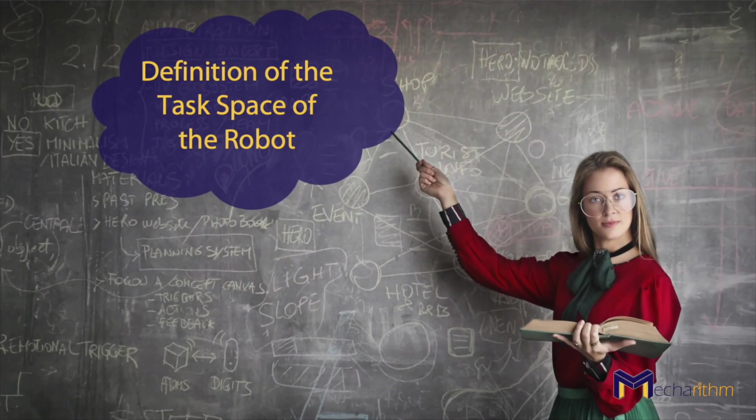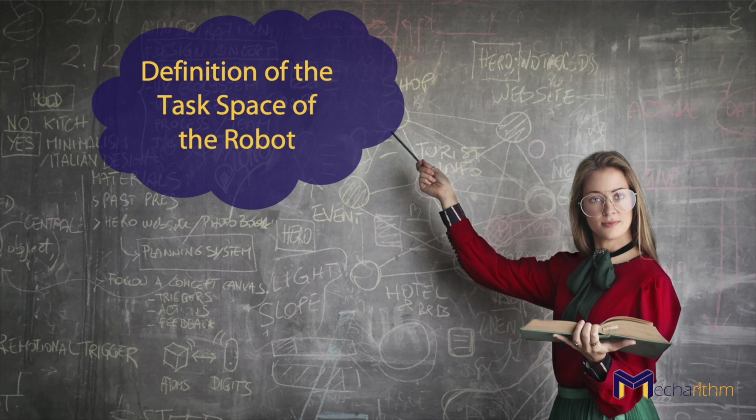By definition, the robot's task space is the space in which the robot's task is naturally expressed. We should only know about the task and not the robot to find the task space. And it's possible that the robot cannot reach some of the configurations.